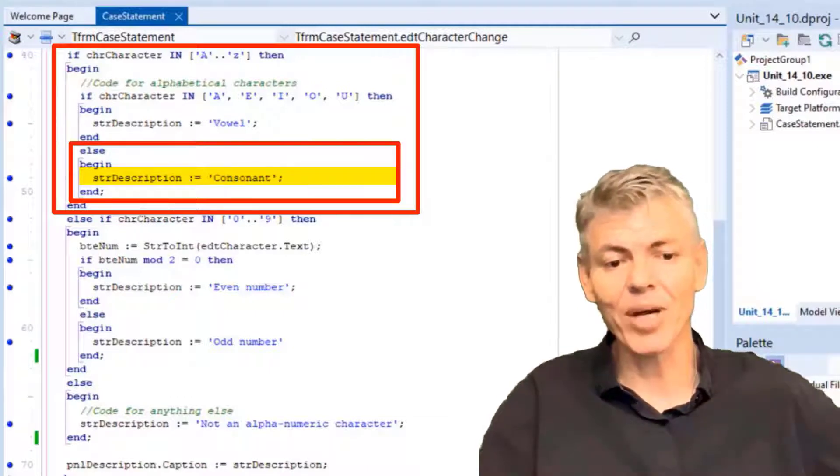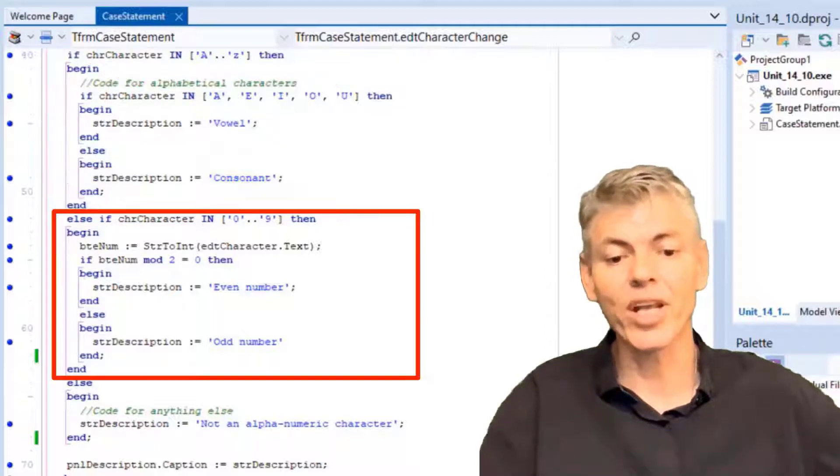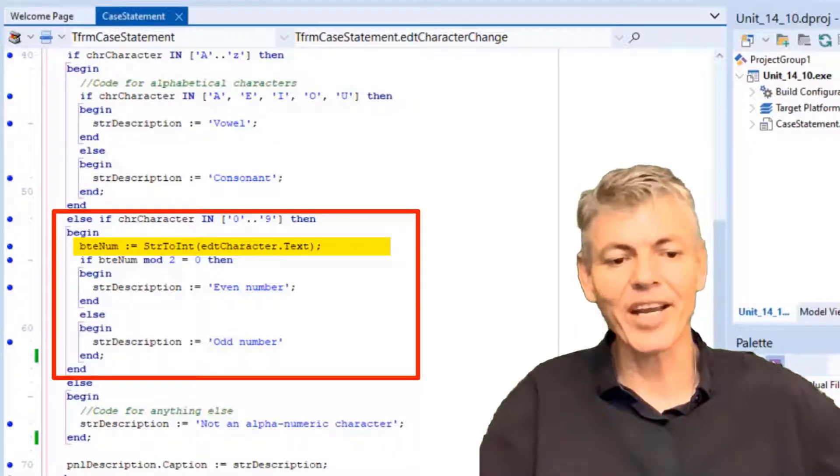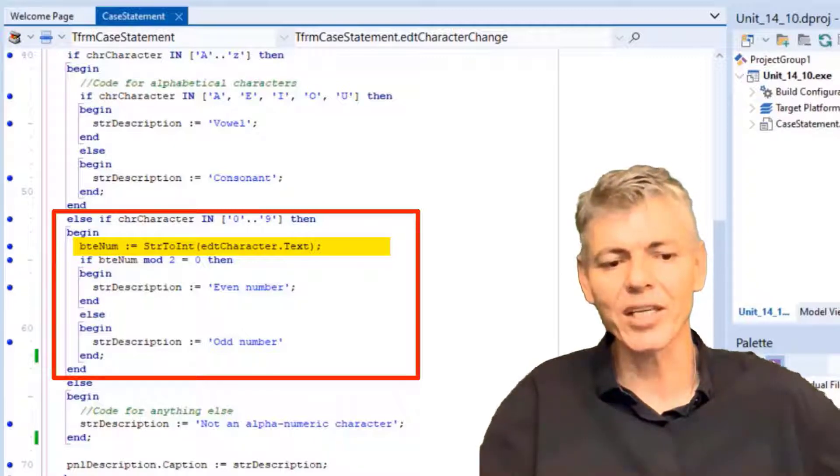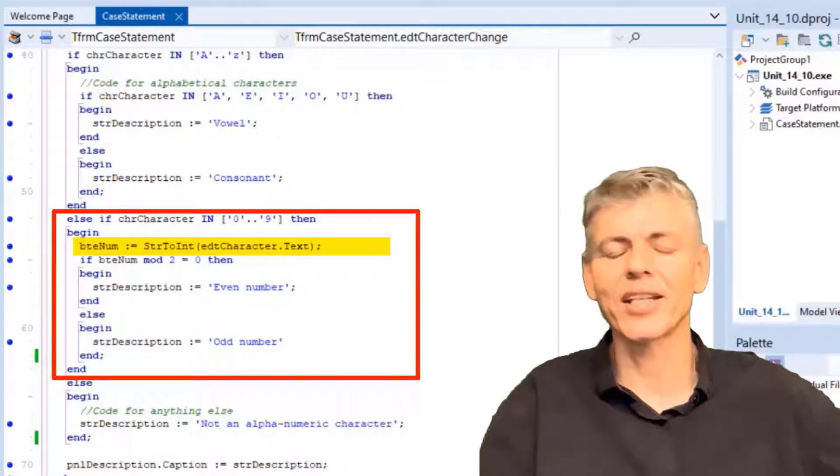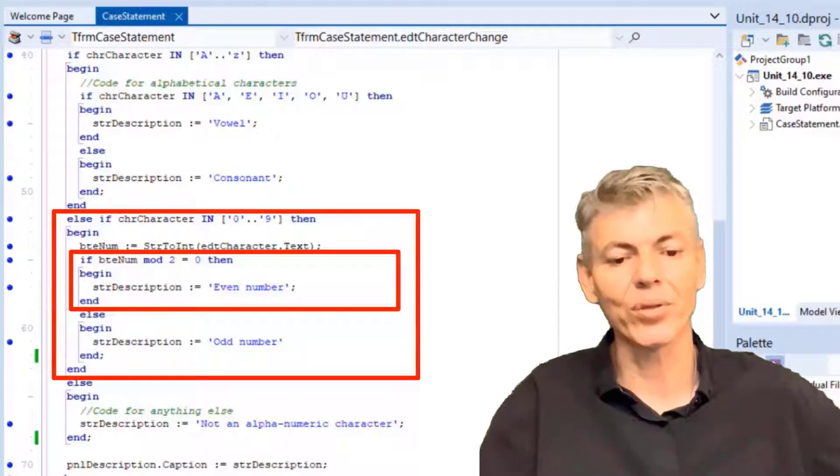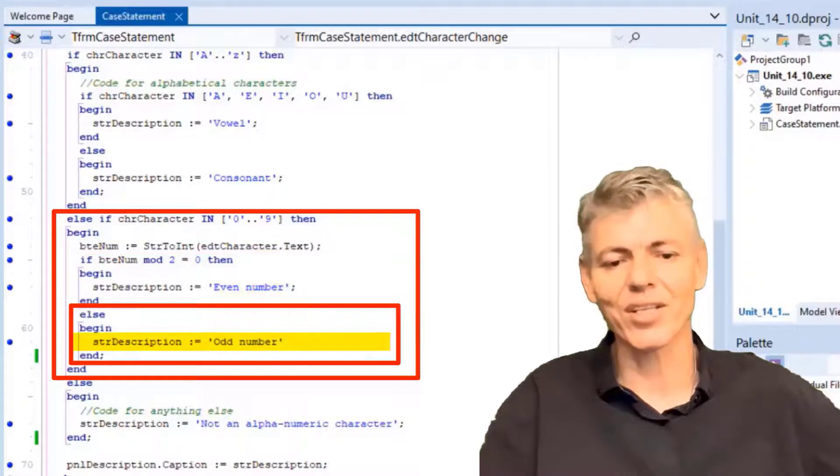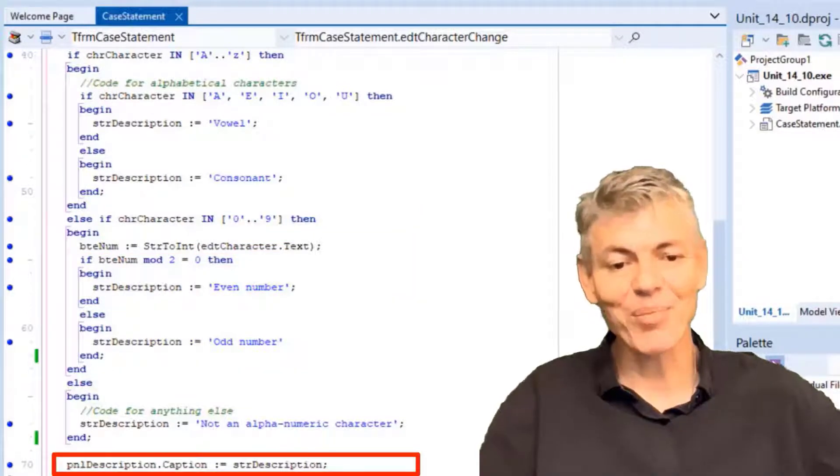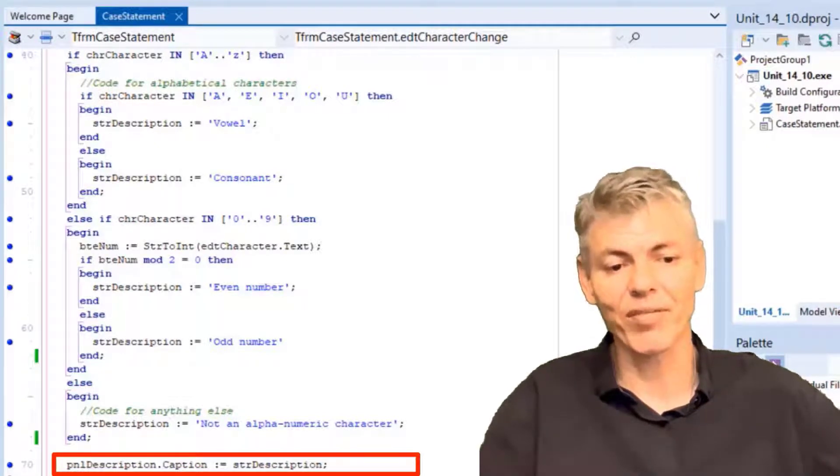If the character is a number, the compiler skips the first outer if statement and moves on to the else if. The inner branch converts the numeric character in the edit to an integer type and the result is then assigned to a byte variable named btenum. We do this conversion because we must use the number in a mathematical expression and we can't do that while the number is still a text character. After we assign the converted value, another if statement takes the number and divides it by 2 with the mod operator. If the remainder is 0, the words even number is assigned to strDescription. If there is a remainder, the words odd number is assigned to strDescription. The statement here at the bottom executes regardless of which condition in this whole structure is true. This statement assigns the value to the caption of the panel.